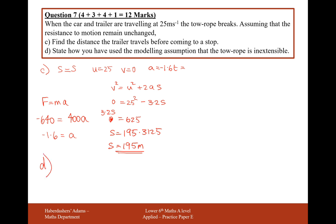Part D is state how I've used the modelling assumptions that the tow rope is inextensible. We have used the assumption that the tow rope is inextensible by the fact we have assumed acceleration is constant and equal between the car and the trailer.